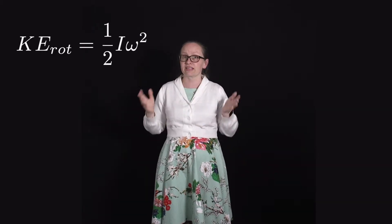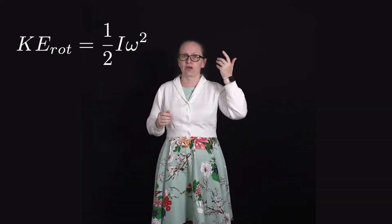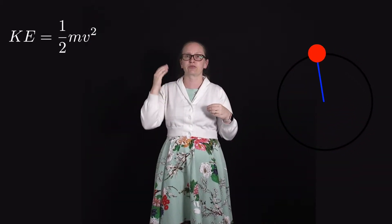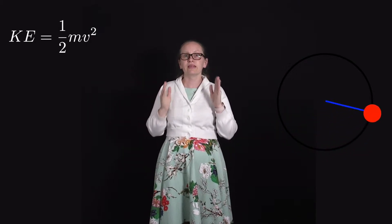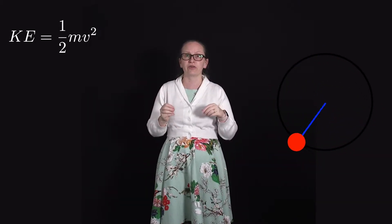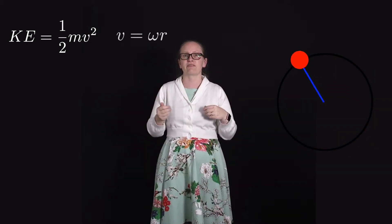Let's look at the simplest case to show that the kinetic energy is given by this expression. We consider a massless rod of length r with a point mass m on the end. We let it rotate, with the mass travelling around its circular path with some speed v. To calculate the kinetic energy when the mass moves with speed v, we use KE = ½mv².